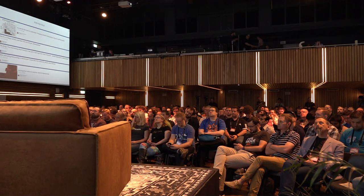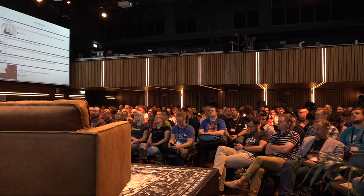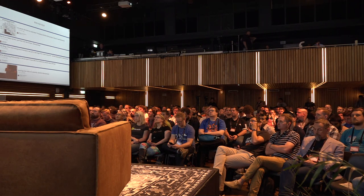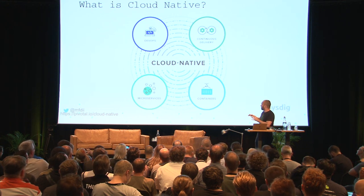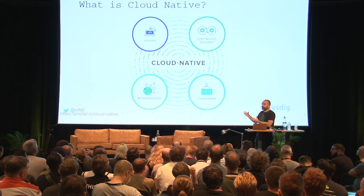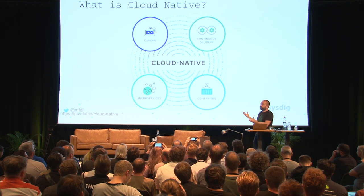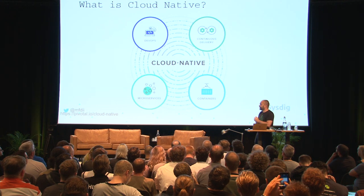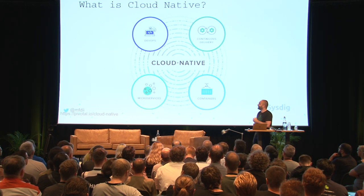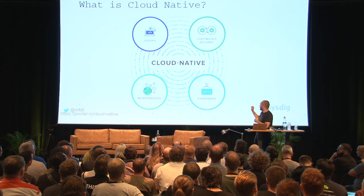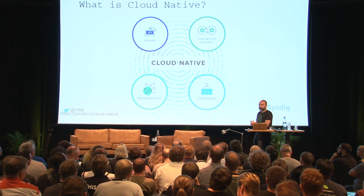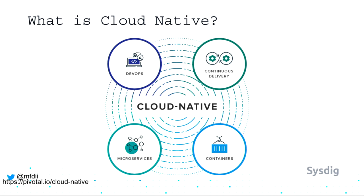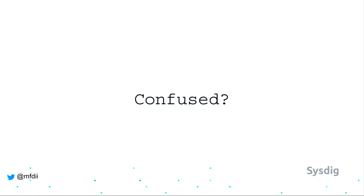Pivotal defines cloud native as: 'an approach to building and running applications that fully exploit the advantages of the cloud computing model.' They also have a diagram showing the intersection of multiple components — it gives a good idea of where the pieces lie and how they come together to deliver on the promise of cloud native. It incorporates the principles of microservices, the speed that containers provide such as reproducible builds and reproducible deployments, and the principles of continuous delivery that we've been talking about in DevOps for a long time.